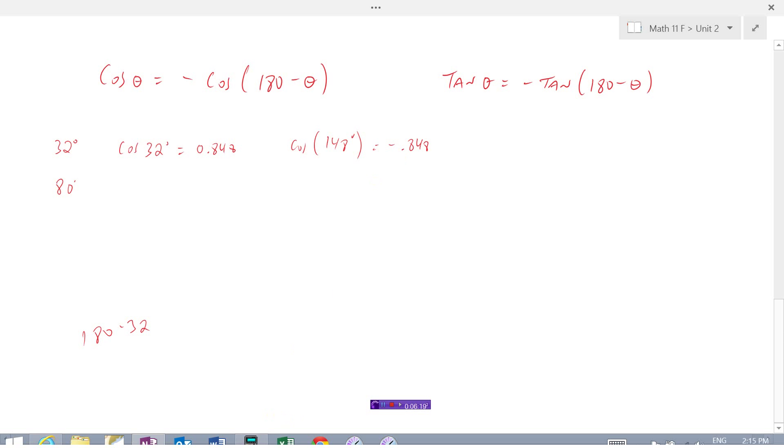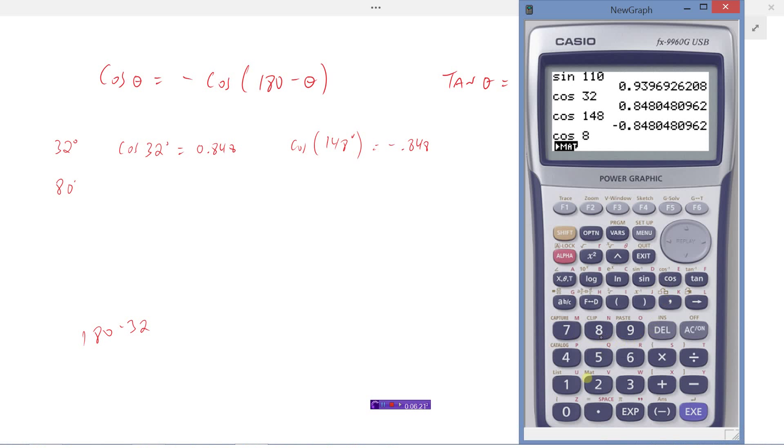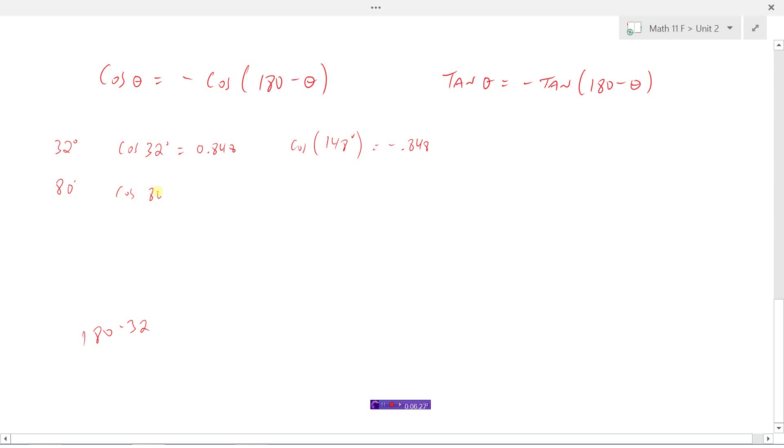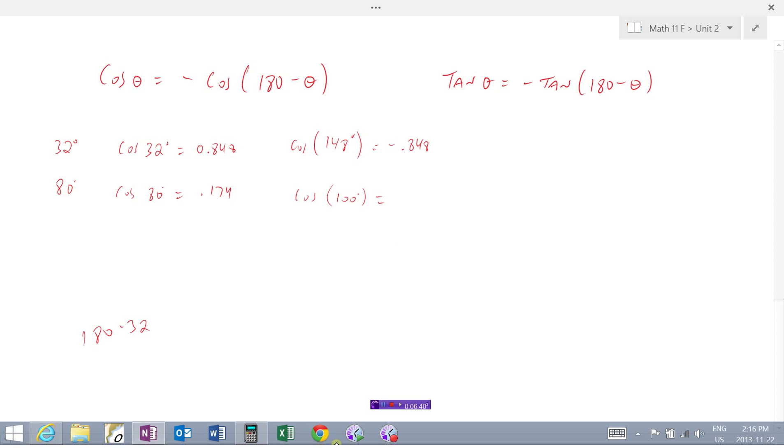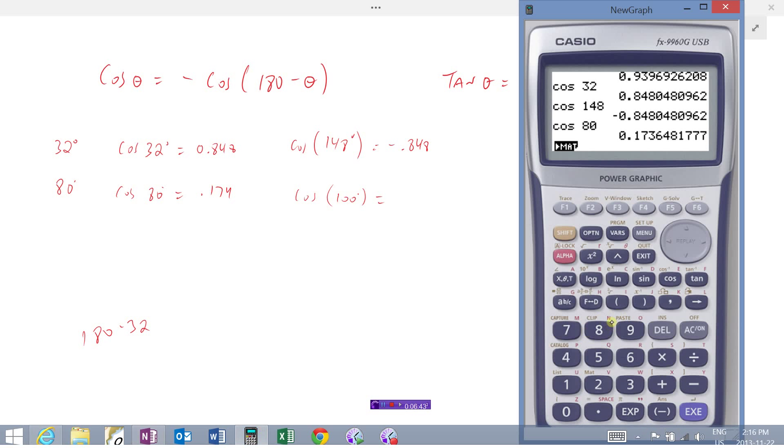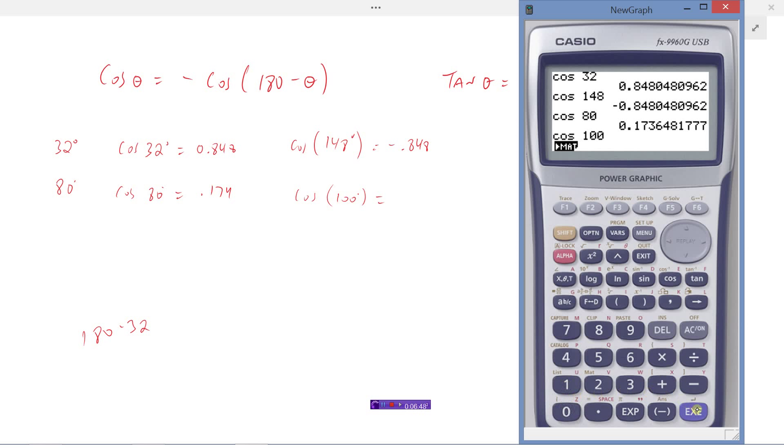We'll check that with 80. Cosine of 80 is 0.174. And then cosine of 180 minus 80, which would be 100 degrees. The obtuse one should be exactly the same as the acute one here, but with a negative in front. Let's check that out. Cosine of 100 should come out to be negative 0.174. Yes, it does.